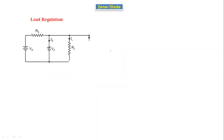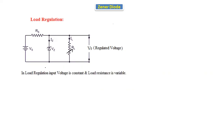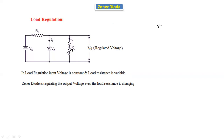In load regulation, the input voltage (supply voltage VS) is kept constant, but we vary the load resistance continuously. In the previous case (line regulation) the load resistance was constant, but here we vary the load resistance — that is called load regulation. The Zener diode regulates the output voltage even as the load resistance is changing.